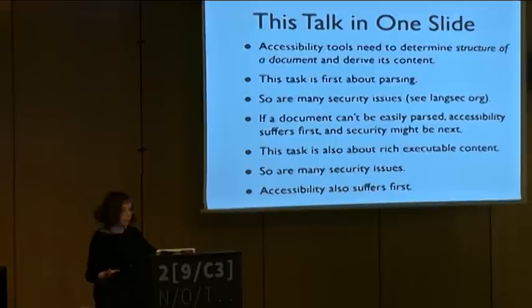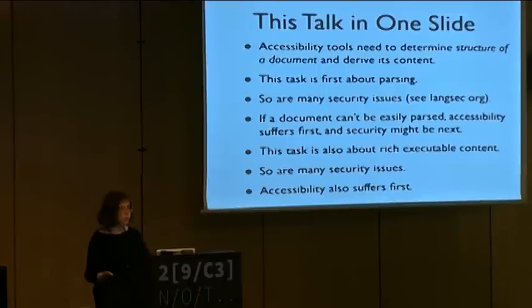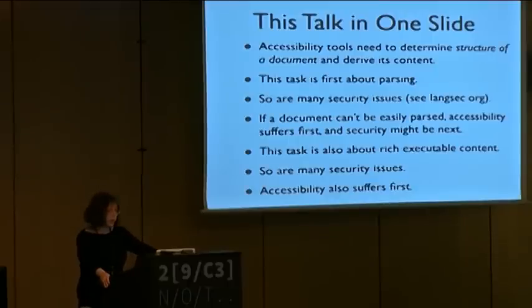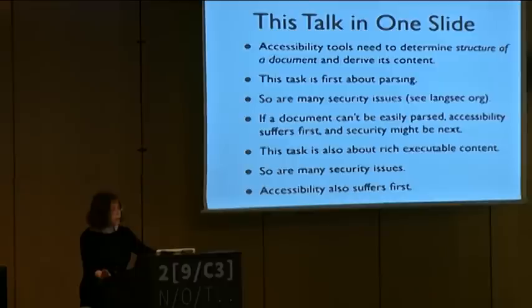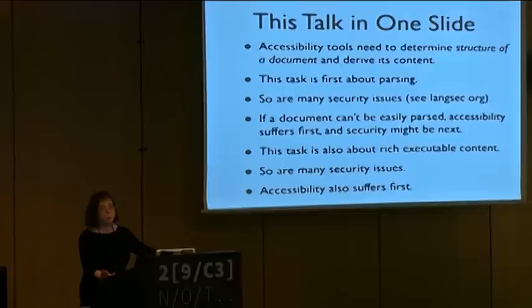In one slide: accessibility tools need to figure out what's in the document. They need to determine the structure of a document and then to derive its content. So this is about parsing of your digital content. Many security issues are also about parsing of the documents. And if you have a document format that cannot be easily parsed, then the first people to notice it are the accessibility community. The security problems will likely come next.